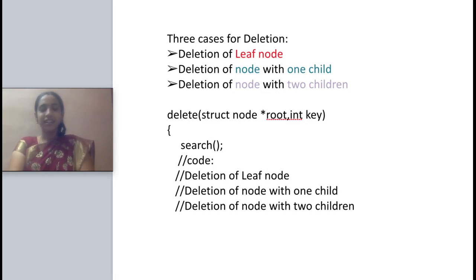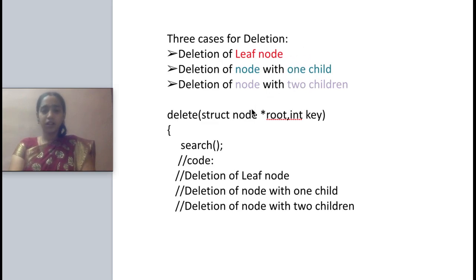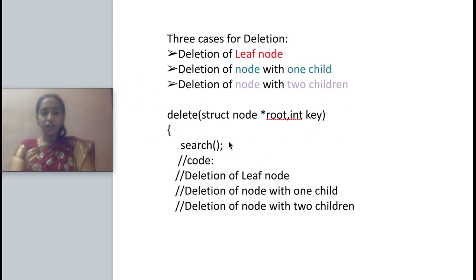We are going to see binary search tree deletion. Deletion involves three cases: deleting a node which is at a leaf, deleting a node which has only one child, and deleting a node which has two children. For all three cases we have to write code separately. Whenever you are writing the pseudo code for delete, you have to call the search function first.